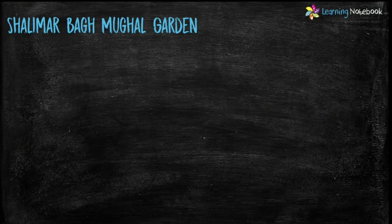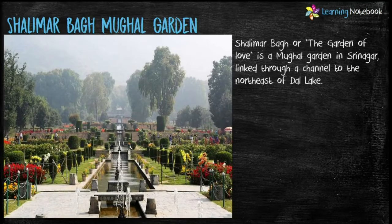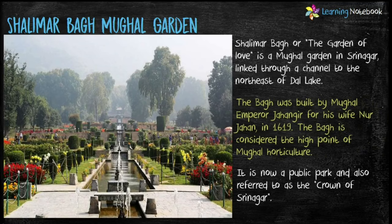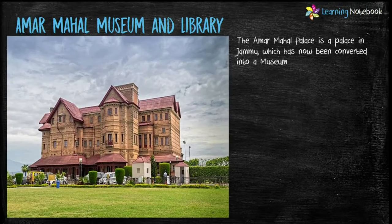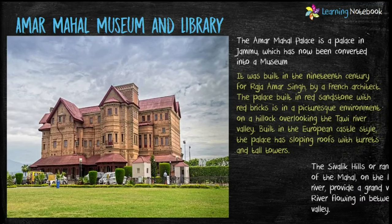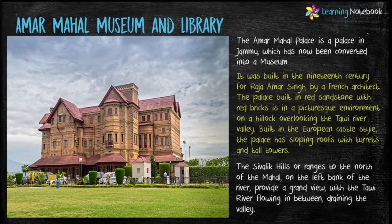The first heritage site to visit is Shalimar Bagh Mughal Garden, located in Srinagar. The park was built by Mughal Emperor Jahangir for his wife Noor Jahan; it is now a public park and is also referred to as the crown of Srinagar. Next is Amar Mahal Museum and Library, a palace in Jammu which has been converted into a museum. The Shivalik hills to the north and the Tawi River flowing in between provide a grand view.